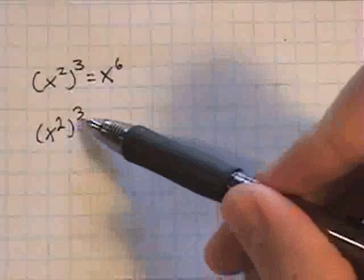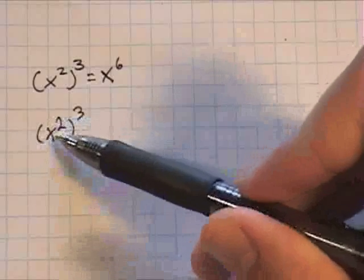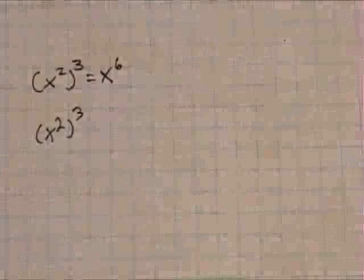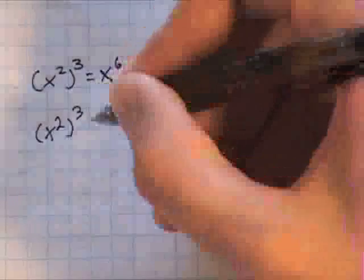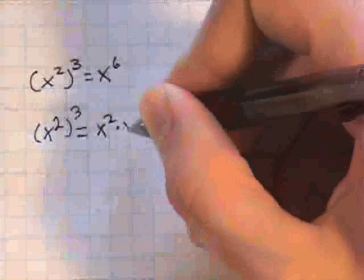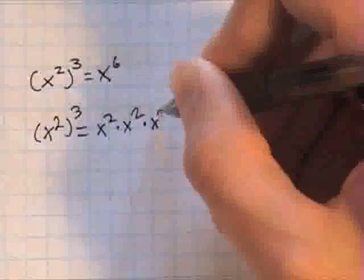So this exponent says that this base right here, x to the 2nd power, is going to appear as a factor 3 times. So we can write it out. Here's one time it appears as a factor, 2, and then 3.